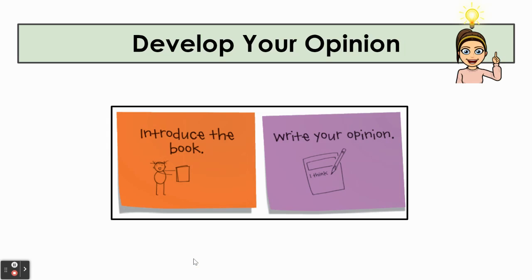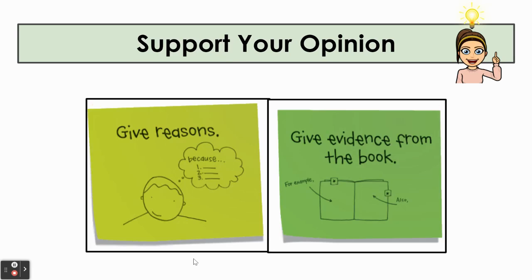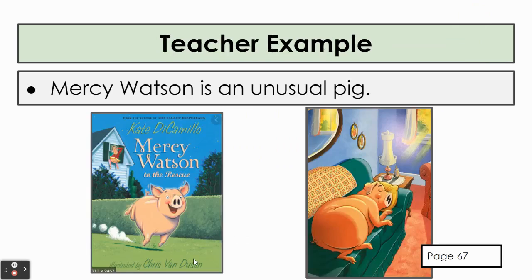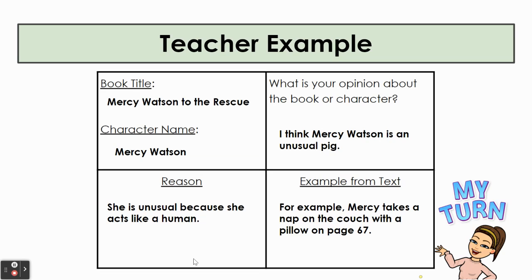So far, we have developed your opinion by introducing the book and writing out your opinion on our planning sheet. On Tuesday, we supported your opinion by giving a reason for your opinion and finding text evidence from the book to support your opinion. This was an example of my opinion that Mercy Watson is an unusual pig, and I had text evidence from page 67 where I said that Mercy acts like a human, and my example was her sleeping on the couch like a person would. This was my example of my planning sheet where I filled in my opinion, my reason, and my example from the text.